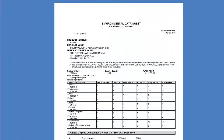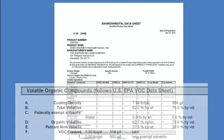Another document you may look at is called an environmental data sheet or EDS. An EDS is a document that gives information in regards to environmental considerations such as air quality, water quality, and toxic waste disposal. If a manufacturer supplies an EDS, there is a high chance that it will have the VOC information you need.